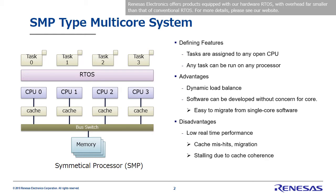What's more, to preserve consistency between all the cache contents, a circuit called cache coherence is implemented. When cache coherence is executed, the CPU stalls, which is another source of poor real-time performance. Finally, there are issues that aren't limited to SMP. Many SMP systems also include an MMU. If a miss occurs in the internal TLB in this MMU, the CPU will stall again, naturally leading to further drops in real-time performance.